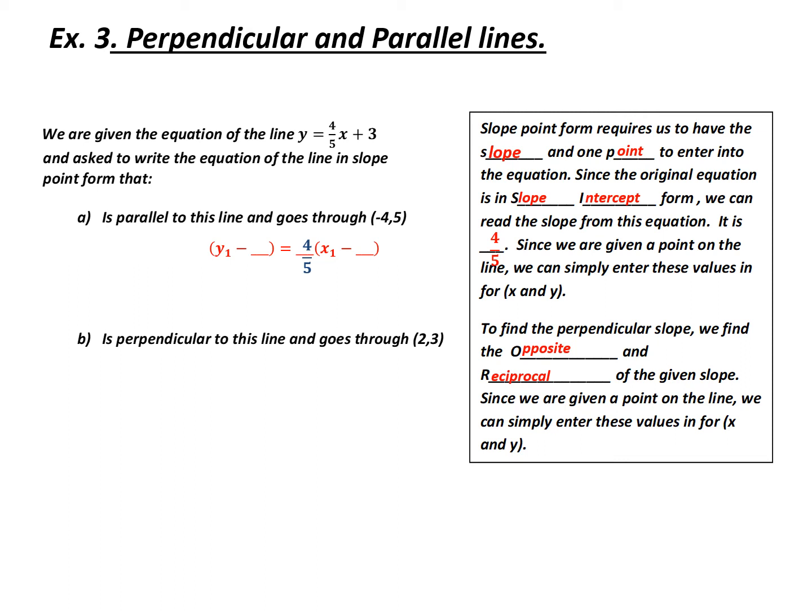Now, I need to enter the values of one coordinate. They've given me that coordinate, so I can enter in 5 for y₂ and -4 for x₂. Notice my x values have that double negative. I can simplify this to x + 4, giving me my final answer of (y - 5) = 4/5(x + 4). Now, it's very important that you don't forget both brackets in the x value, an opening and a closing bracket.